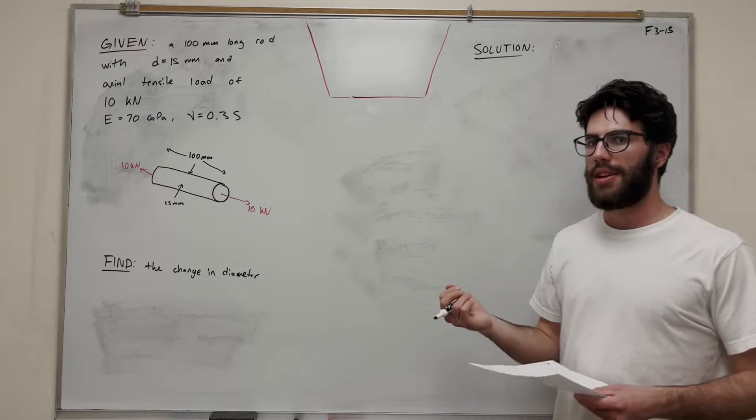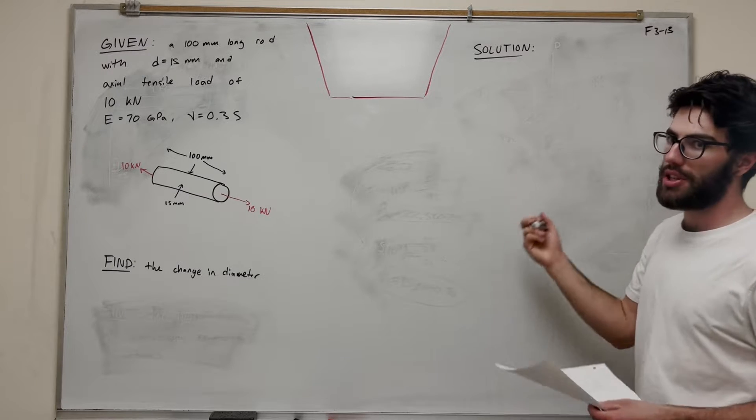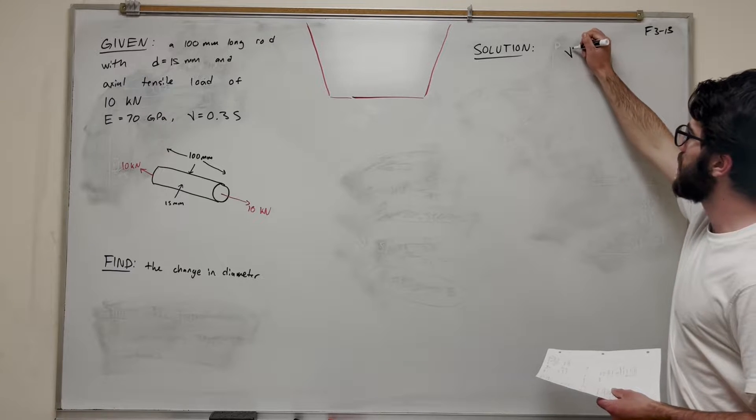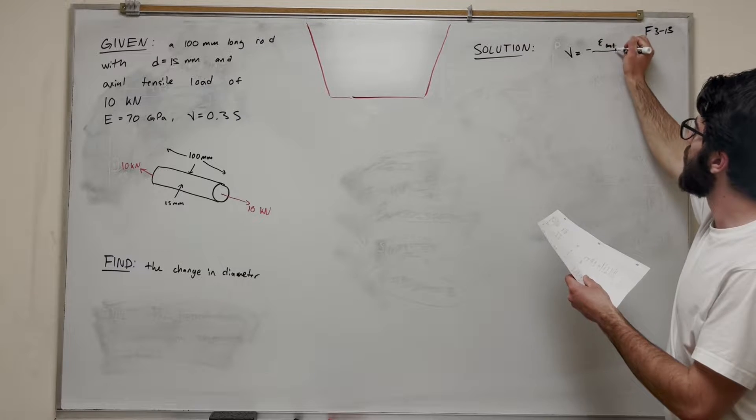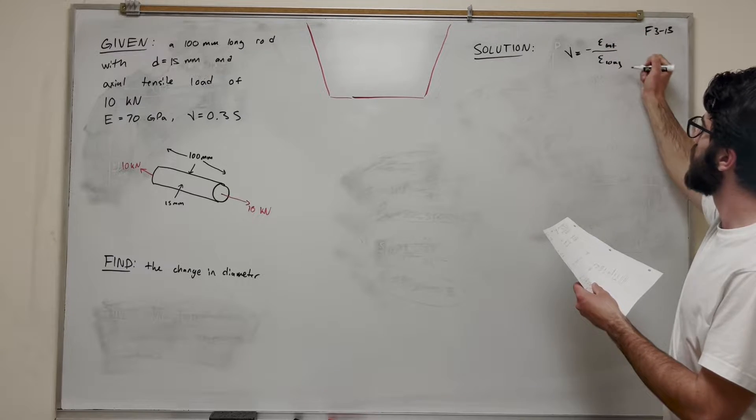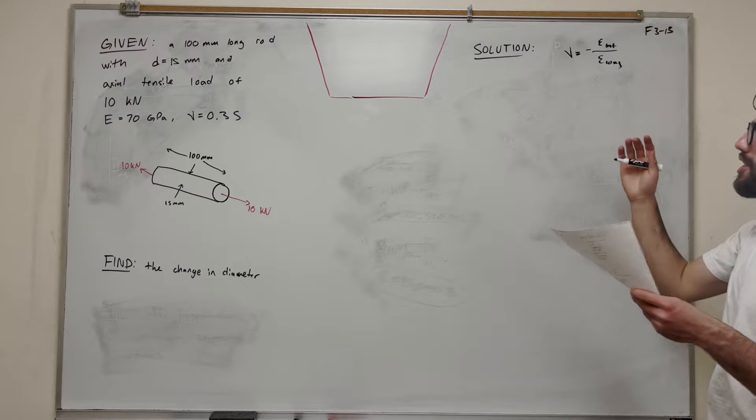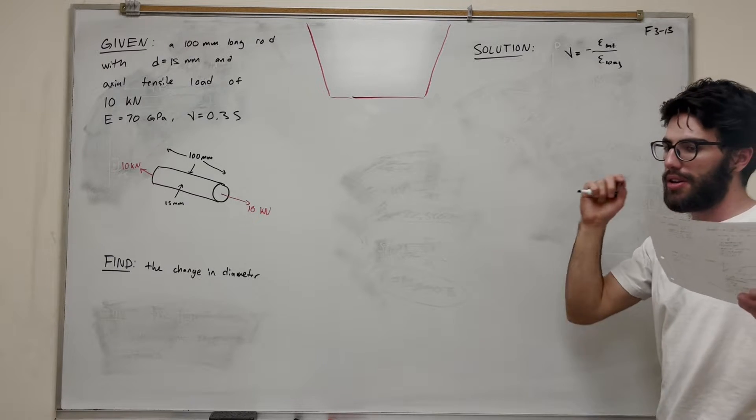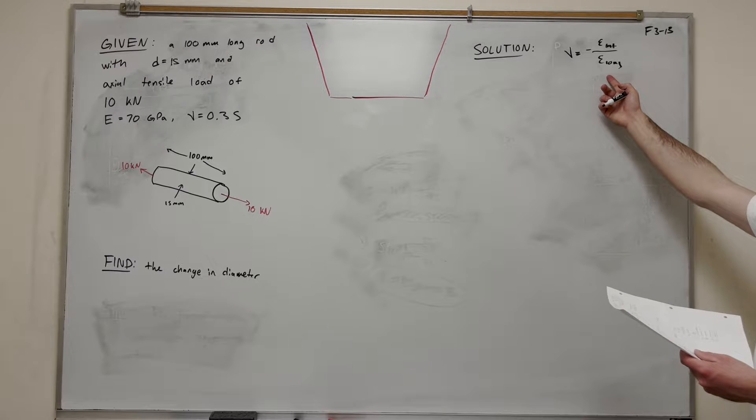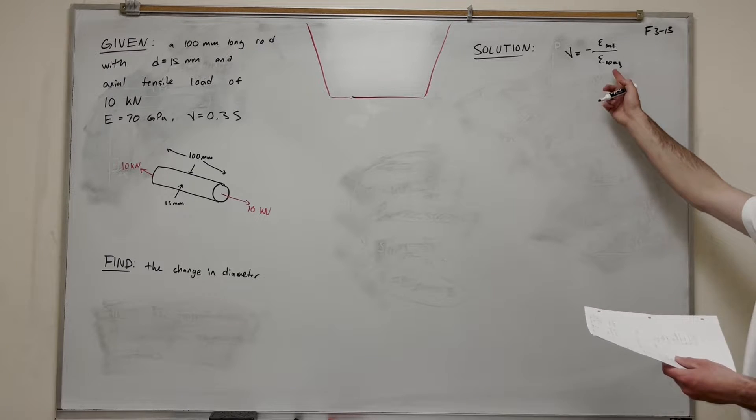So let's go ahead and do that. The basis we're going to use is called Poisson's ratio. V here is equal to negative epsilon lat over epsilon long. Lat is how much it expands laterally, and long is how much it expands longitudinally. This is a normal strain. So let's go ahead and find the normal strain.